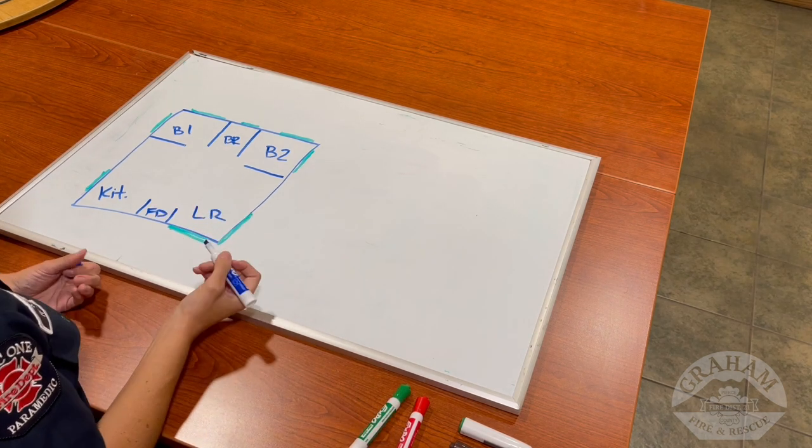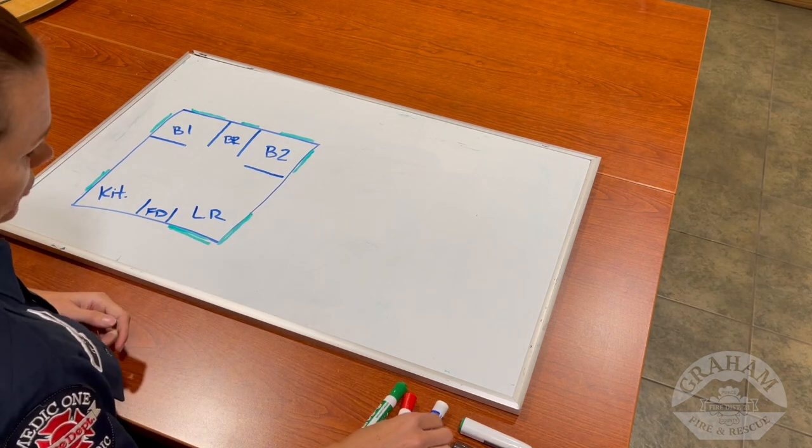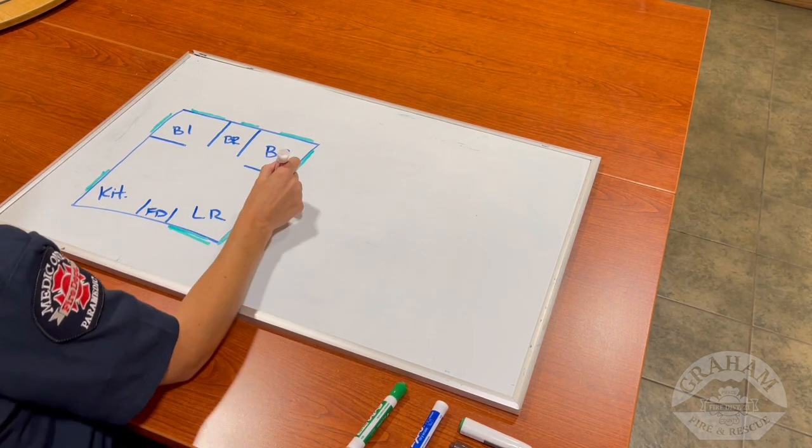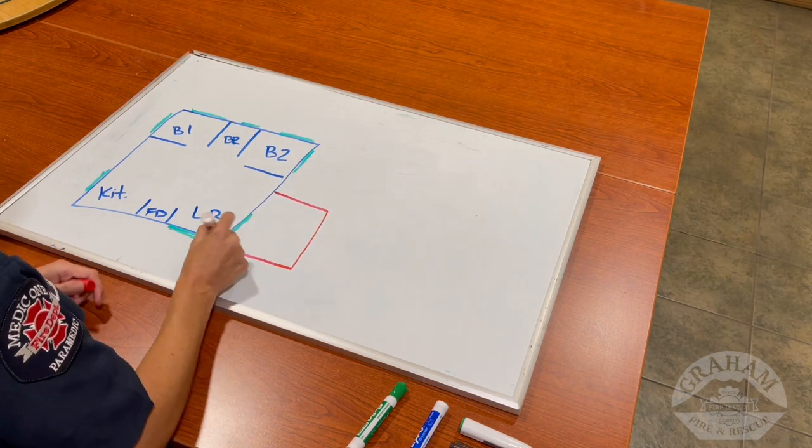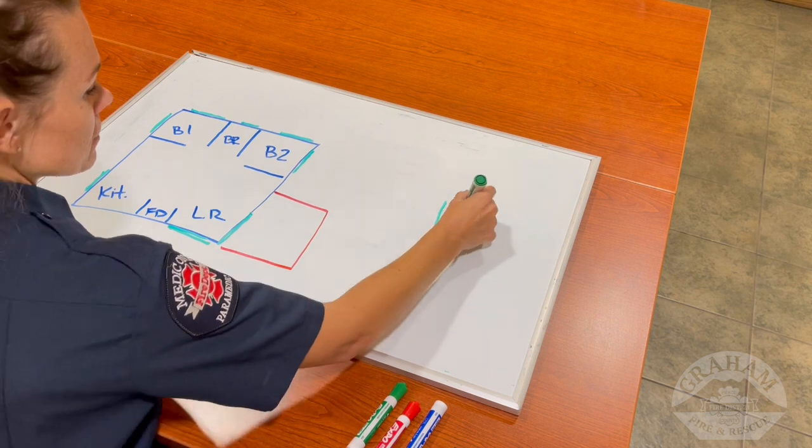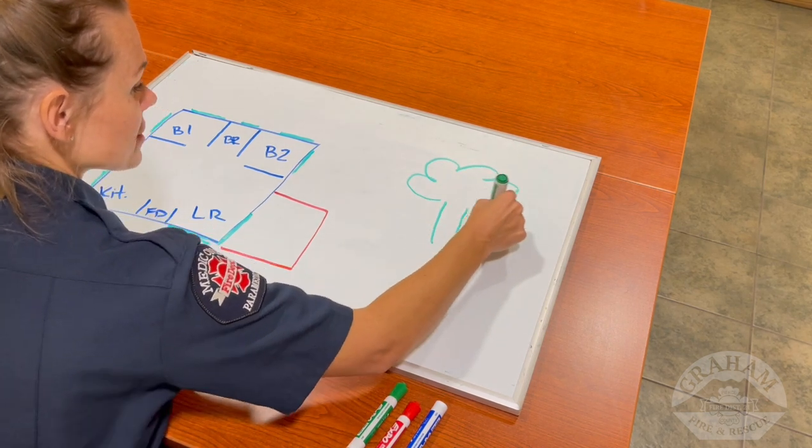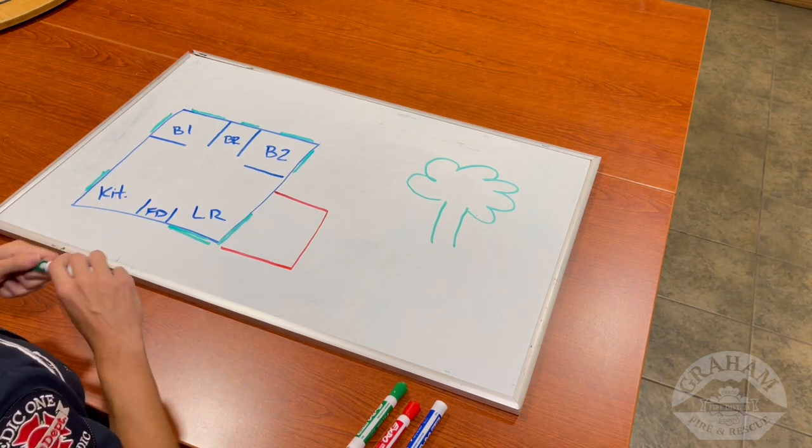Now, every house usually has a porch. So we'll draw it. Why don't we make a different color for the porch? Just to make it fun. Here's our big porch. And then we'll do a big tree. I am not an artist, but I'll try my best. Here we go, Sparky. Okay.